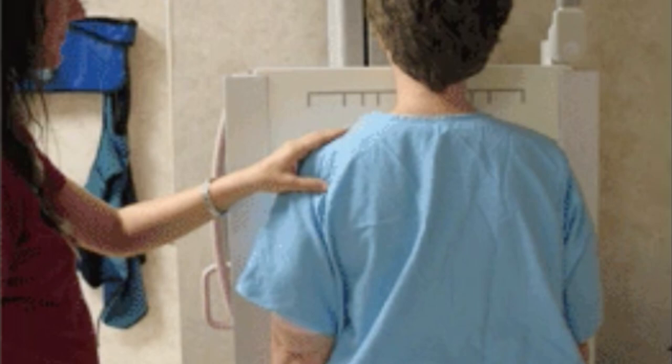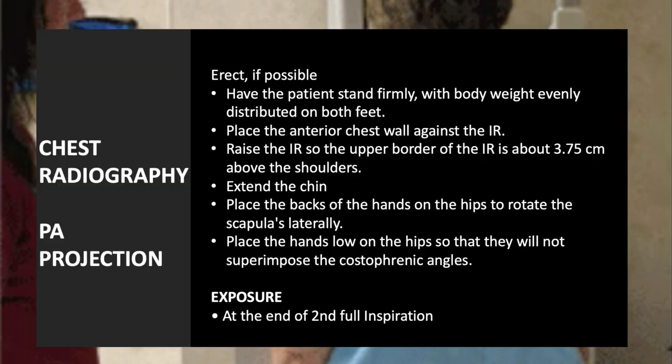Instruct the patient to stand facing the vertical grid device. Be sure to tell the patient to distribute his or her weight equally on both feet. Adjust the height of the vertical grid to 2 inches or 5 cm above the relaxed shoulders. Center the patient's mid-sagittal plane to the middle of the vertical grid. Place a side marker on the correct side of the patient. Assist the patient in placing the backs of the hands low on the hips to ensure the arms are abducted out of the collimated field and the hands are not demonstrated on the image.